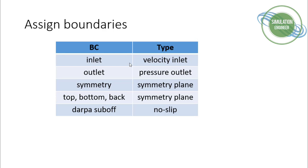I will assign the boundaries: the inlet will be a velocity inlet, the outlet will be a pressure outlet, the central symmetry plane and also the top, bottom, and back planes will be modeled as symmetry, and the DAPA body itself will be a viscous wall boundary condition.